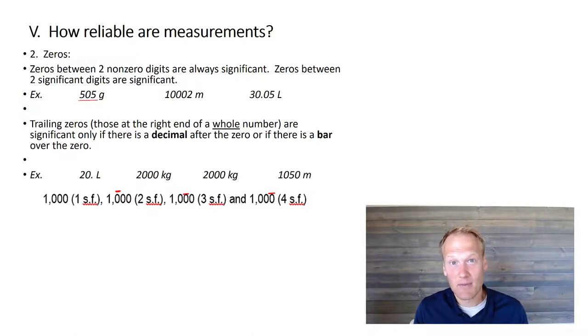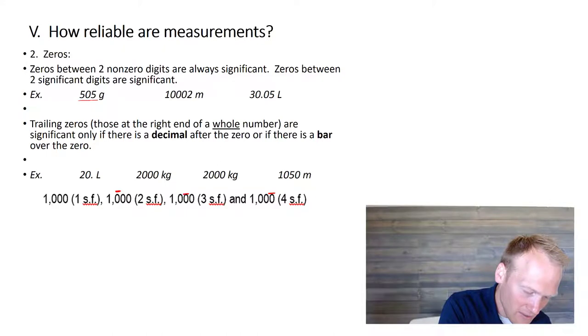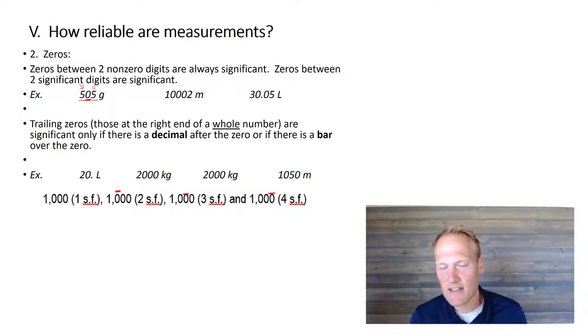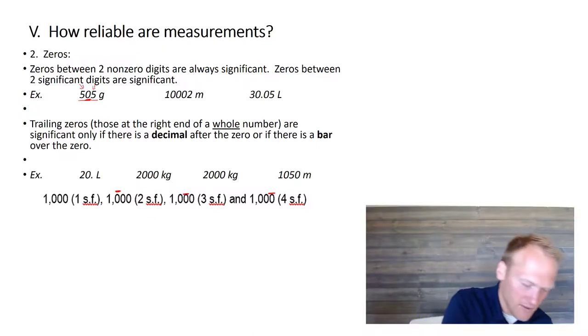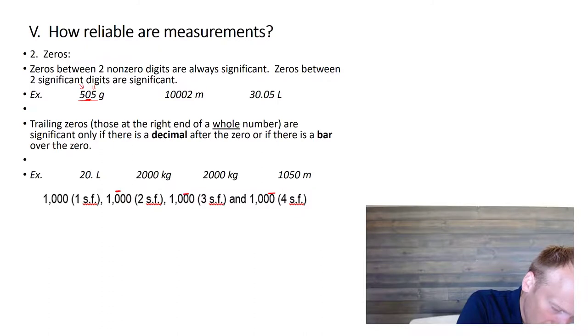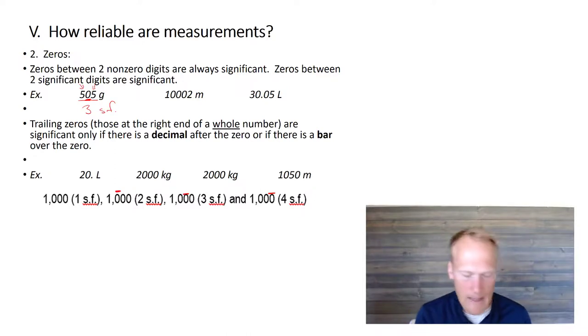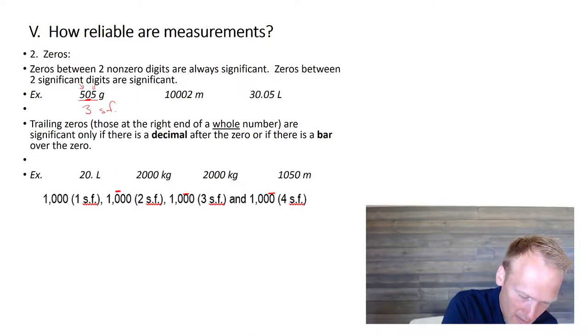And so, that zero there is not an estimated digit. It is a measured digit and therefore it counts. So, this number right here would have one, two, three sig figs. And you can abbreviate SF. 10,002. These are trapped zeros. So, the non-zero digit counts and the trapped zeros count. So, this would have five sig figs. And then finally, we see two here and three on the end. So, this would have four sig figs.